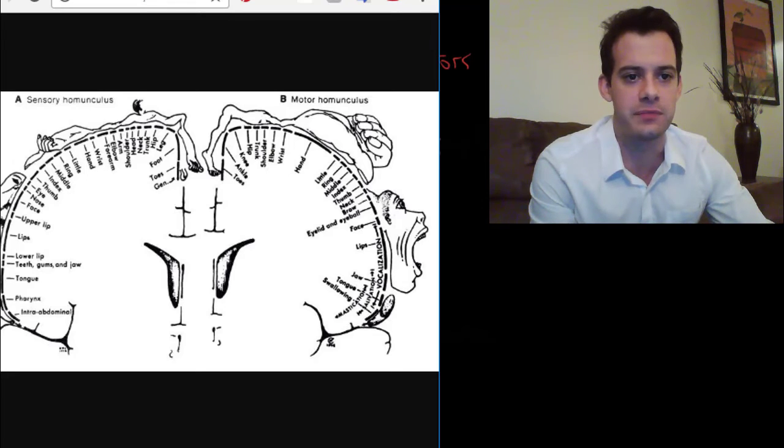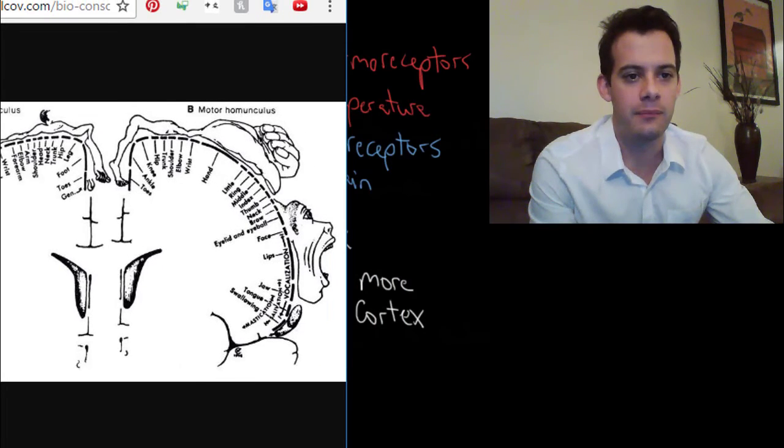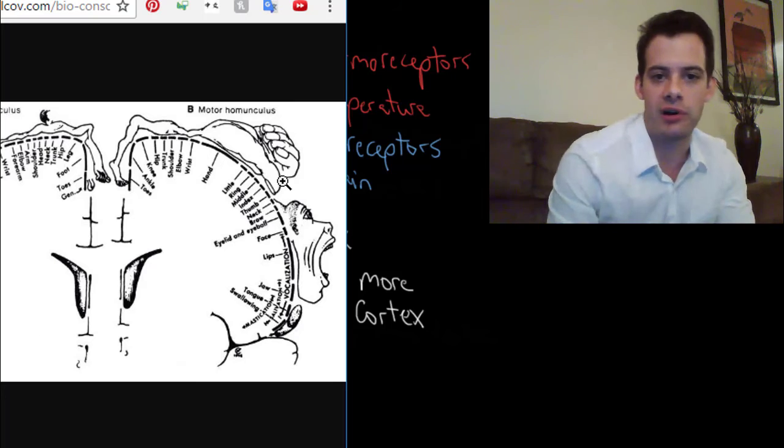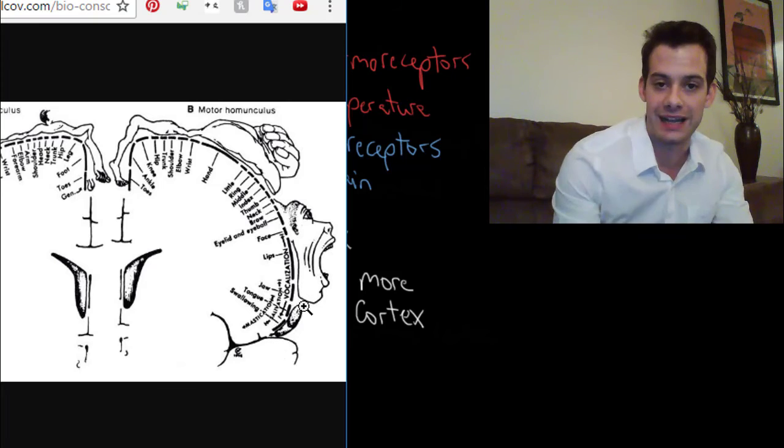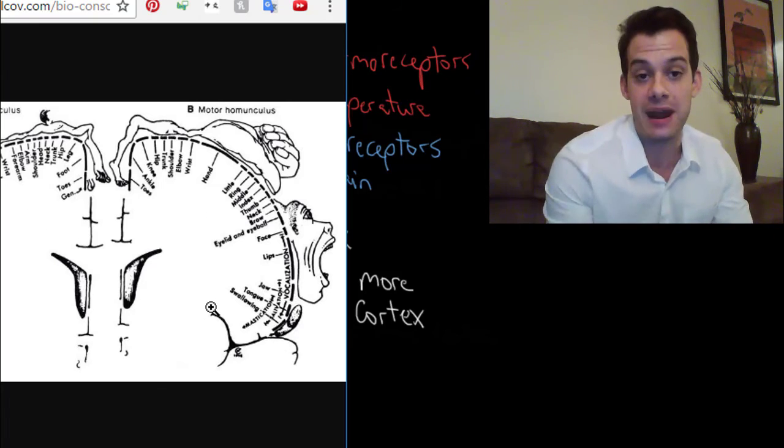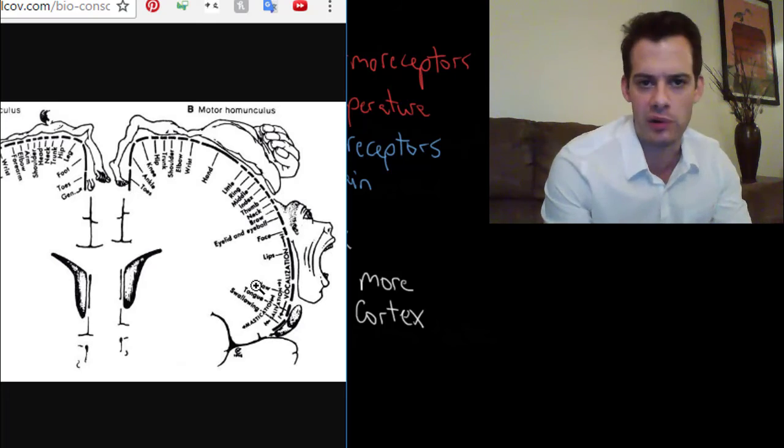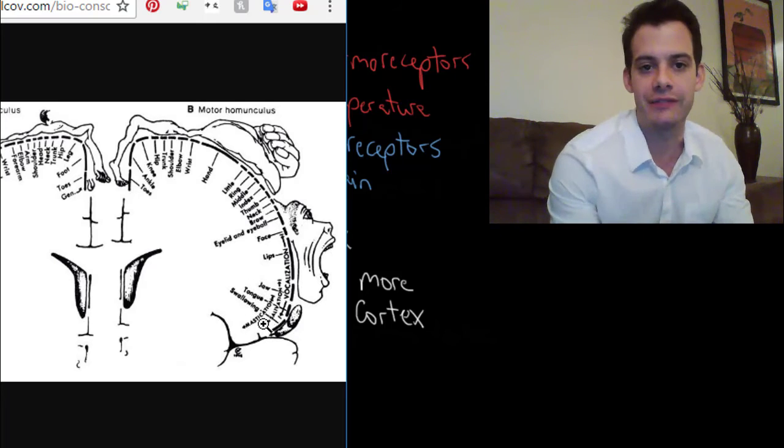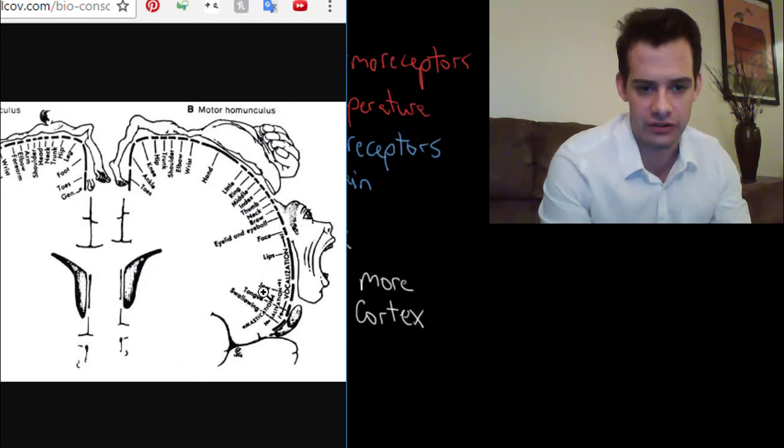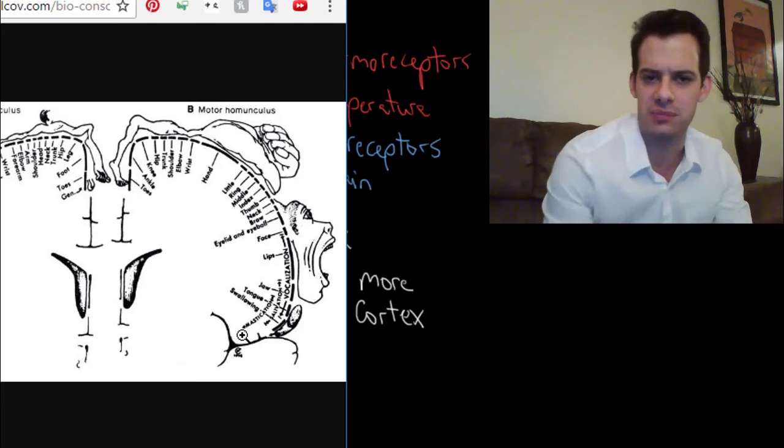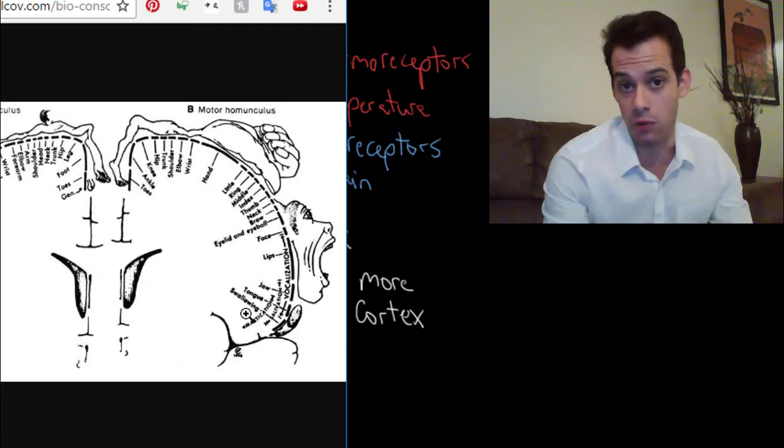Let's look on the other half of this picture though. This is a motor homunculus. So we can also map this out according to motor movements. So the motor cortex is another strip of cortex just in front of the sensory, the somatosensory cortex. The somatosensory cortex is in the parietal lobe and then just in front of it at the sort of end of the frontal lobe is the motor homunculus.